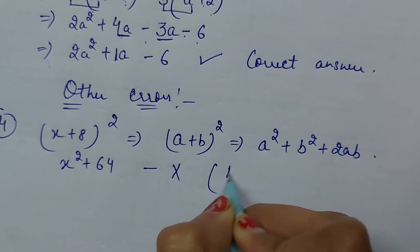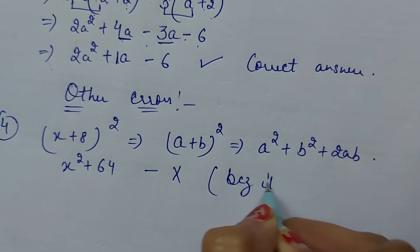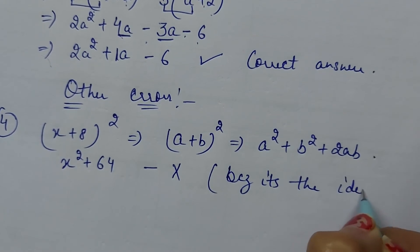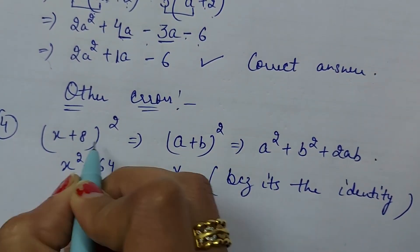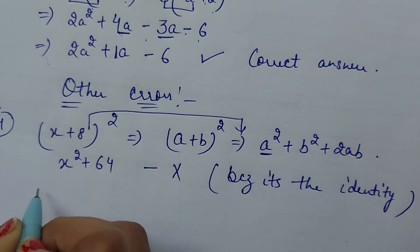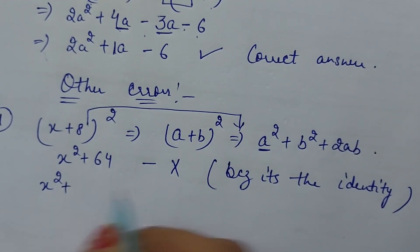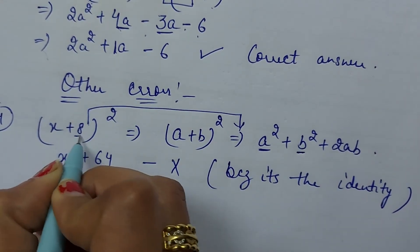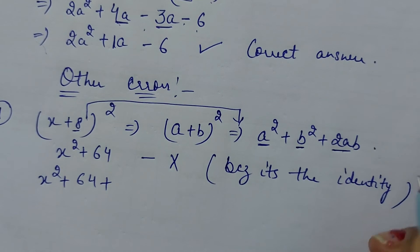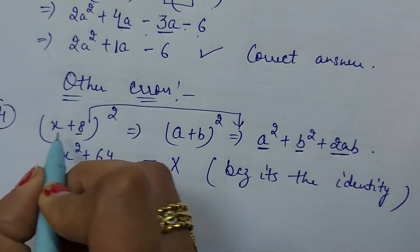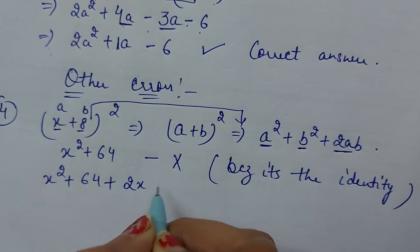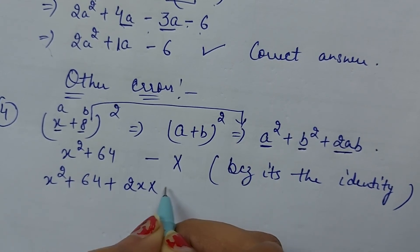Identity hum ise is formula mein apply karenge. a square yani ki x ka square plus b square yani ki 8 ka square, third is 2ab. 2a yeh a hai humare paas yeh b hai x into 8.